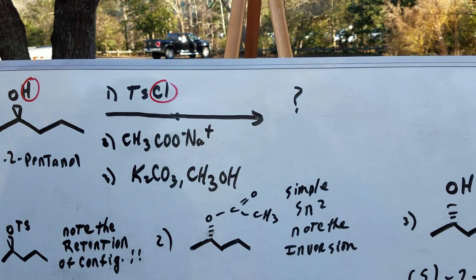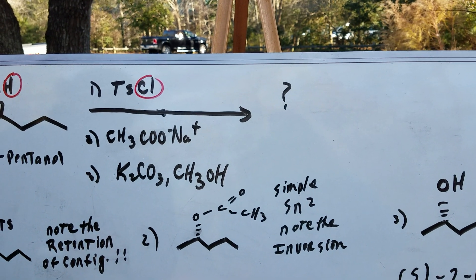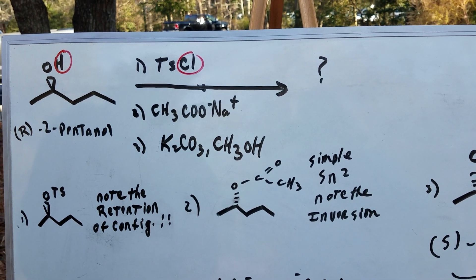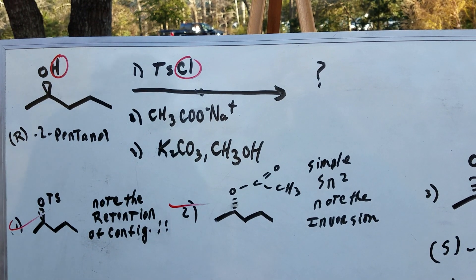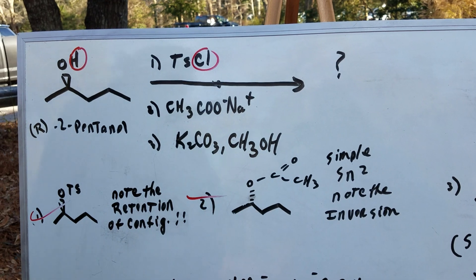Step number two is a simple SN2. Note the inversion, how a wedge is now to a dash. Most students got the first two steps and they're pretty easy. So we made the tosylate, we did the SN2.